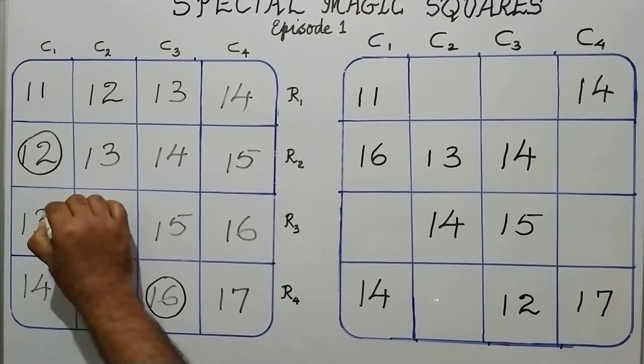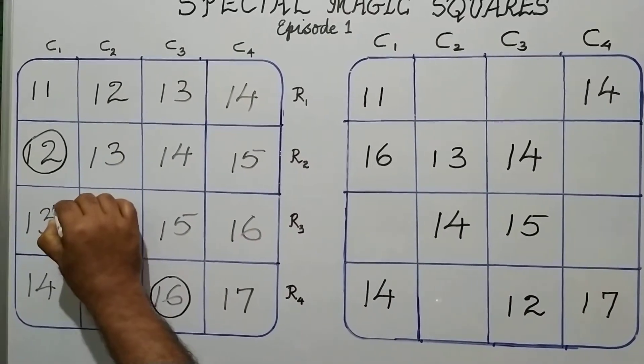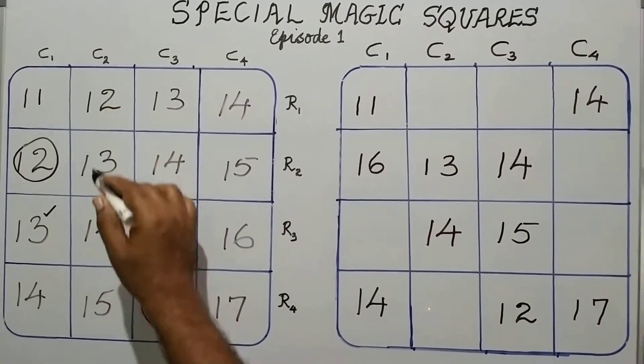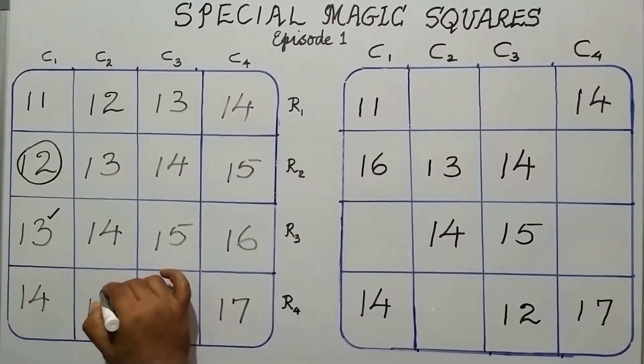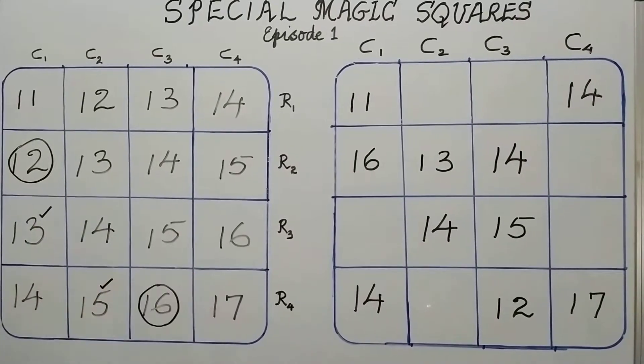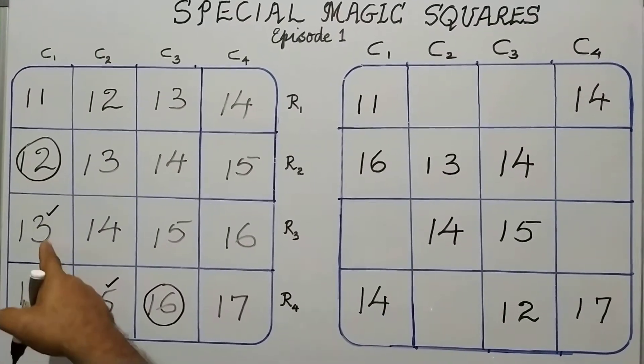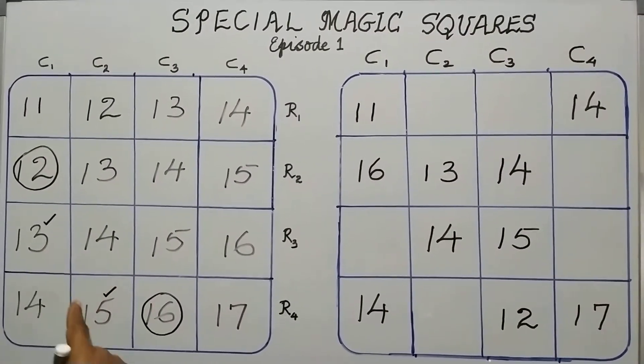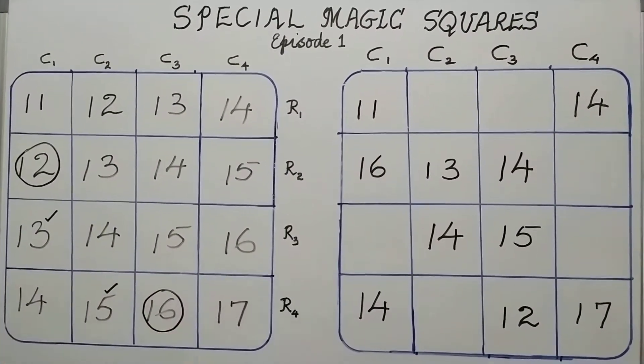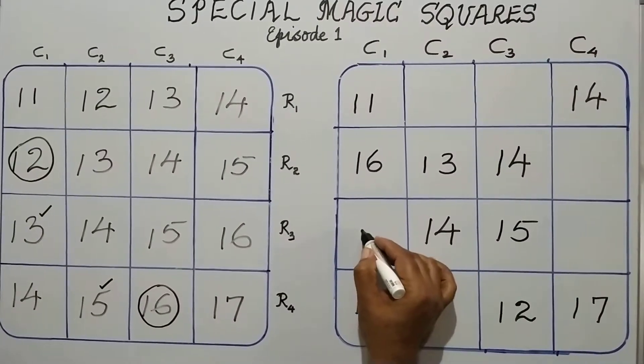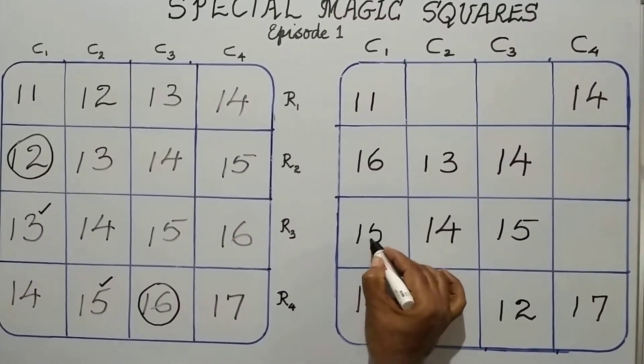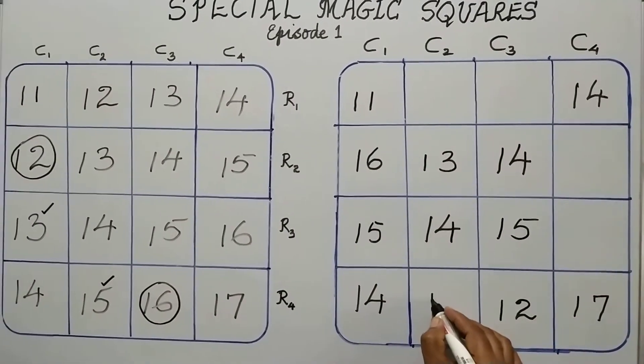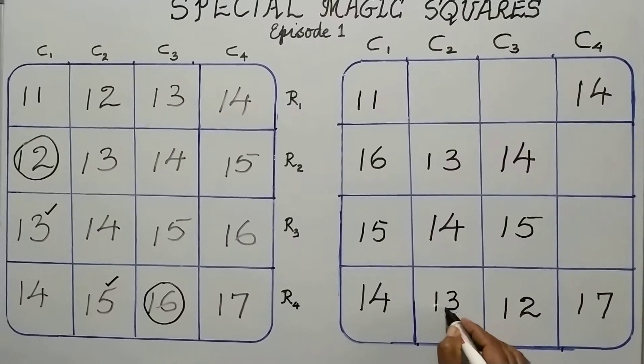In column number 1, I have the third element as 13. In column number 2, I have the fourth element as 15. These two elements, I have denoted by using the small tick mark. Those two, we will interchange. So, 15 comes here in the place of 13 and 13 comes in the place of 15.